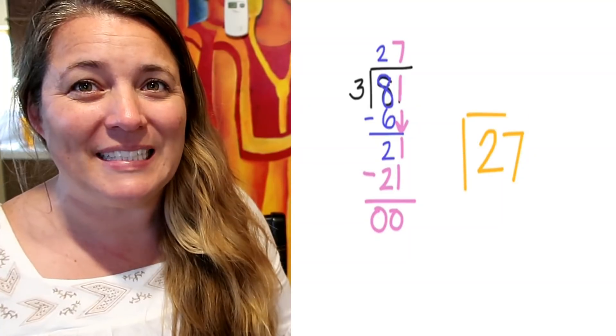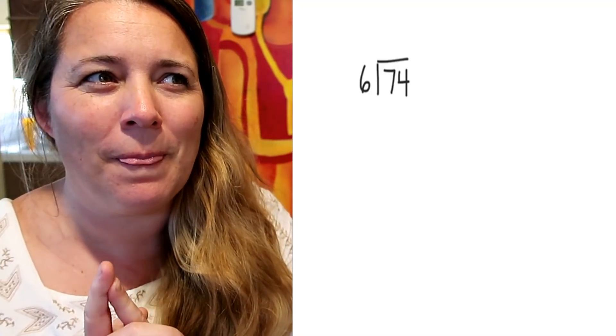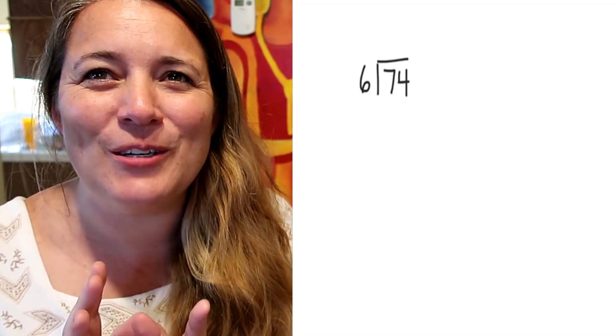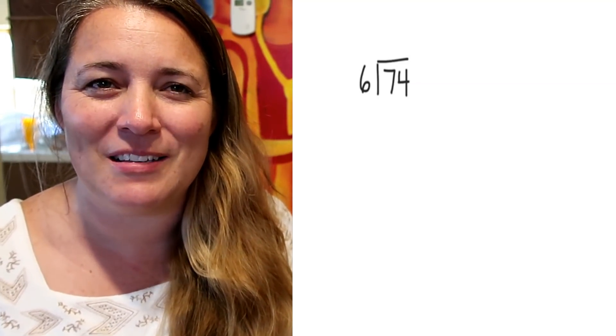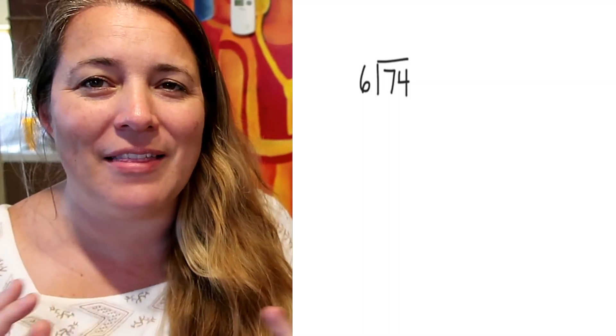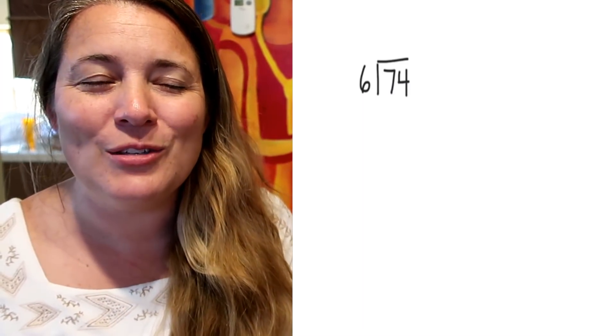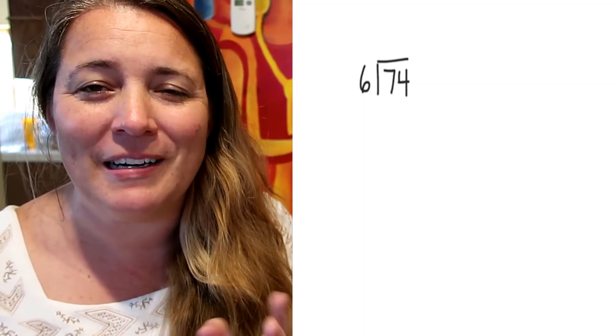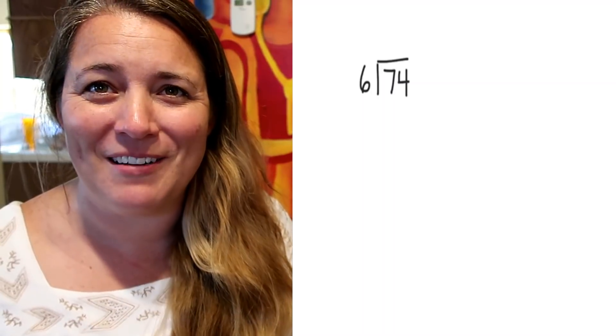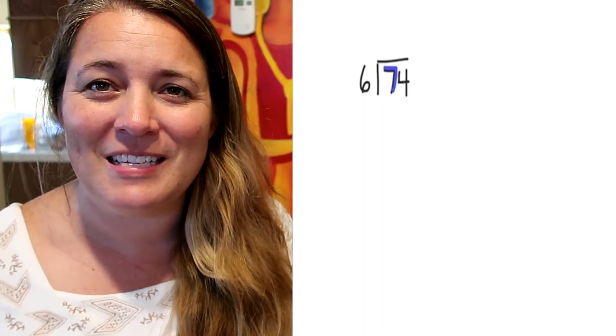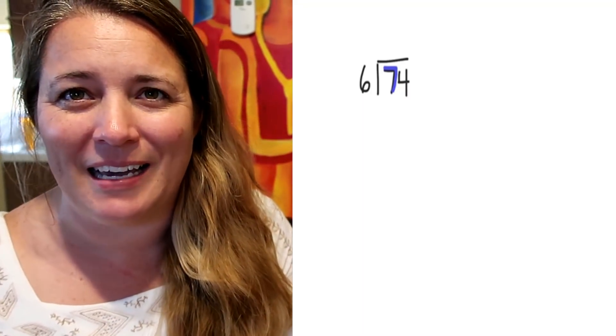Let's try another one, and then we'll talk about something a little bit more challenging. This time we're going to try something a little bit trickier: 74 divided by 6. The first thing we're going to do is identify the divisor — the size of the group — and the size of the group is 6. We want to figure out how many groups of 6 will fit into 74. The number 74 is double-digit, so it's going to be two parts. We start with the 7, and remember: every time we hit 6 sticks, we make a group.